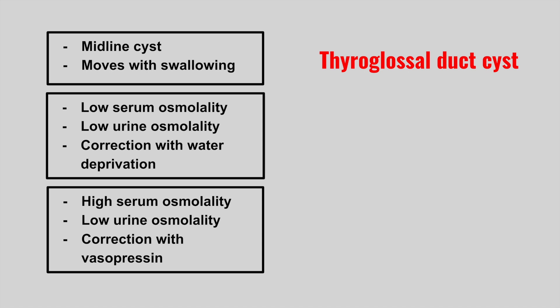The next patient has low serum osmolality, low urine osmolality, and it corrects with water deprivation. This is primary polydipsia.